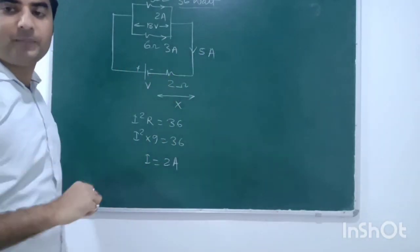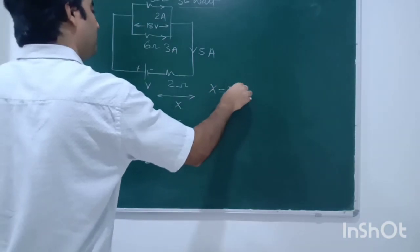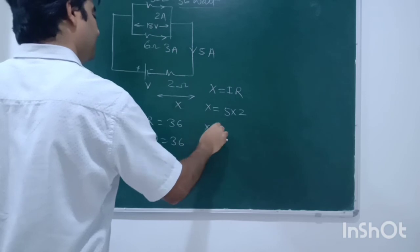Is it clear here? So, x is equal to i. That is 5 into 2. So, that is 10V.